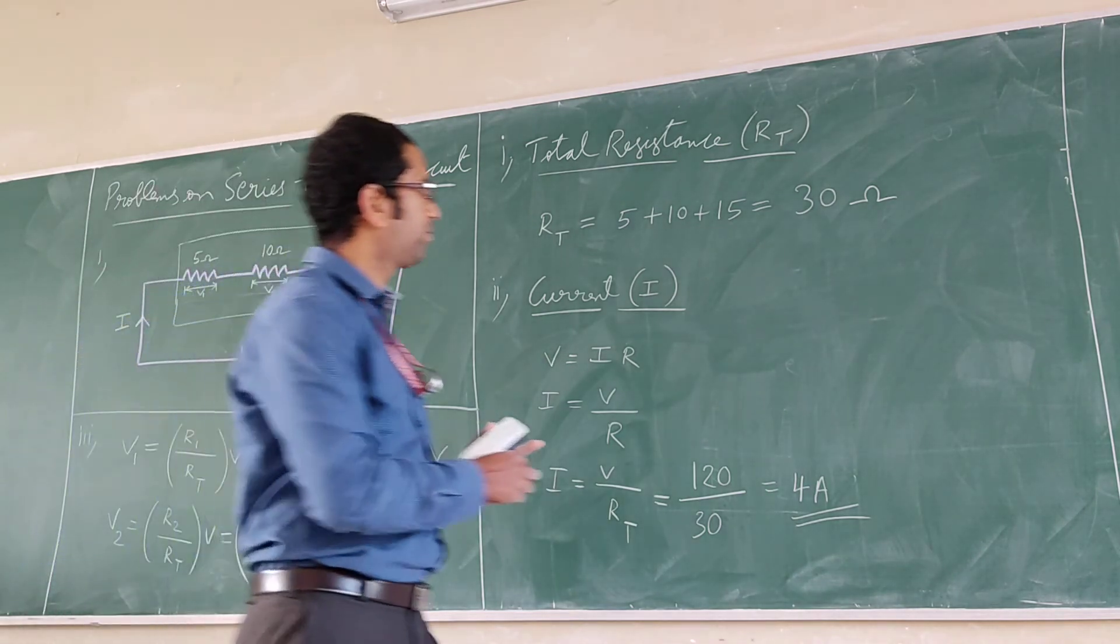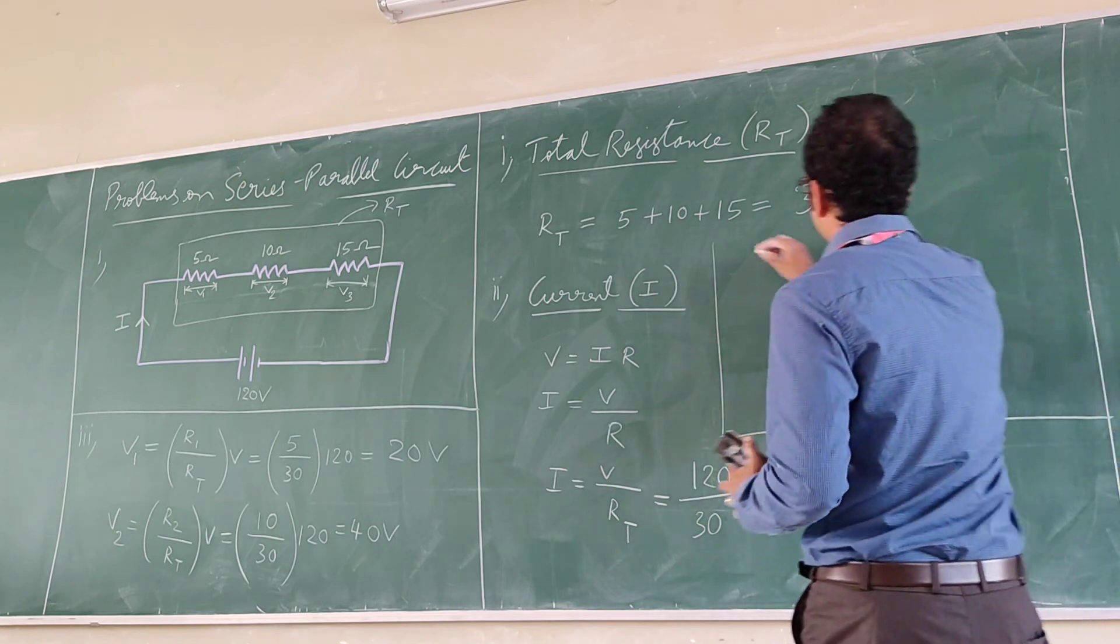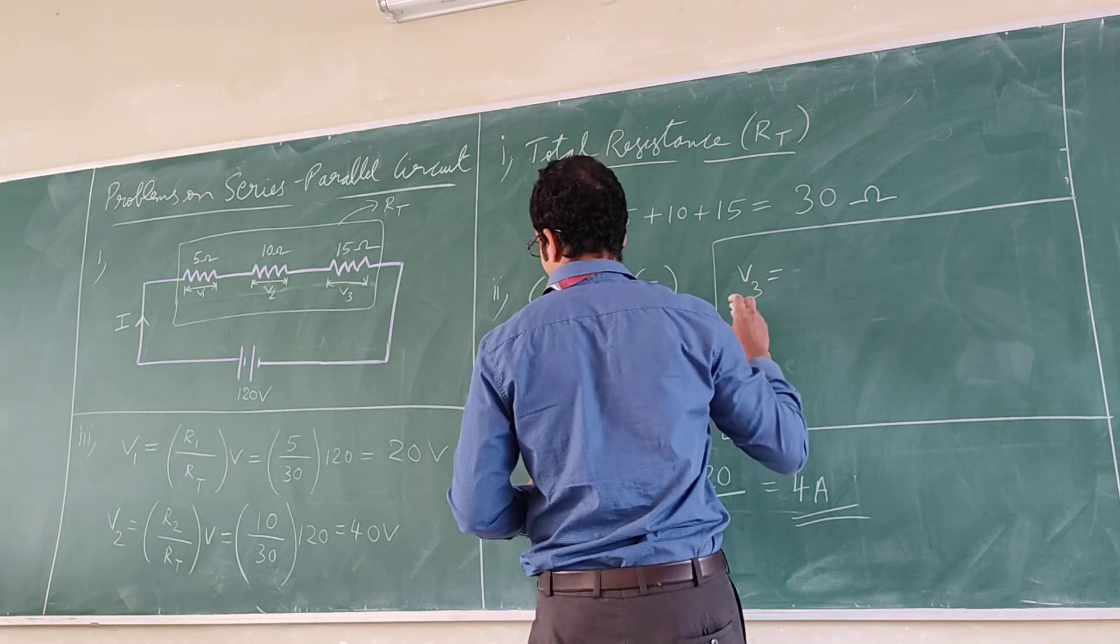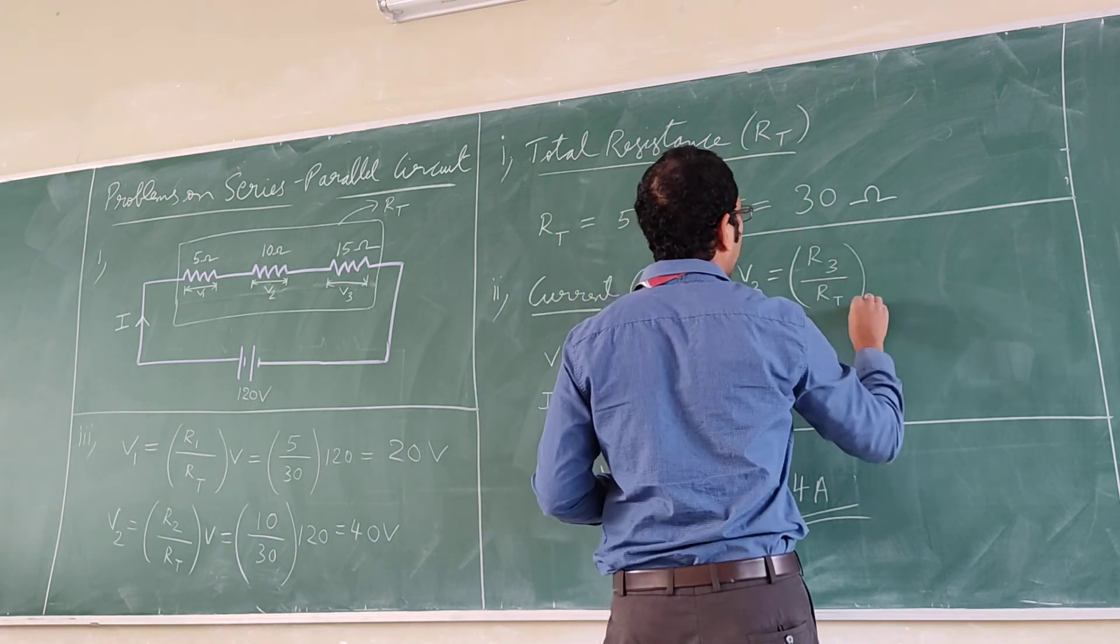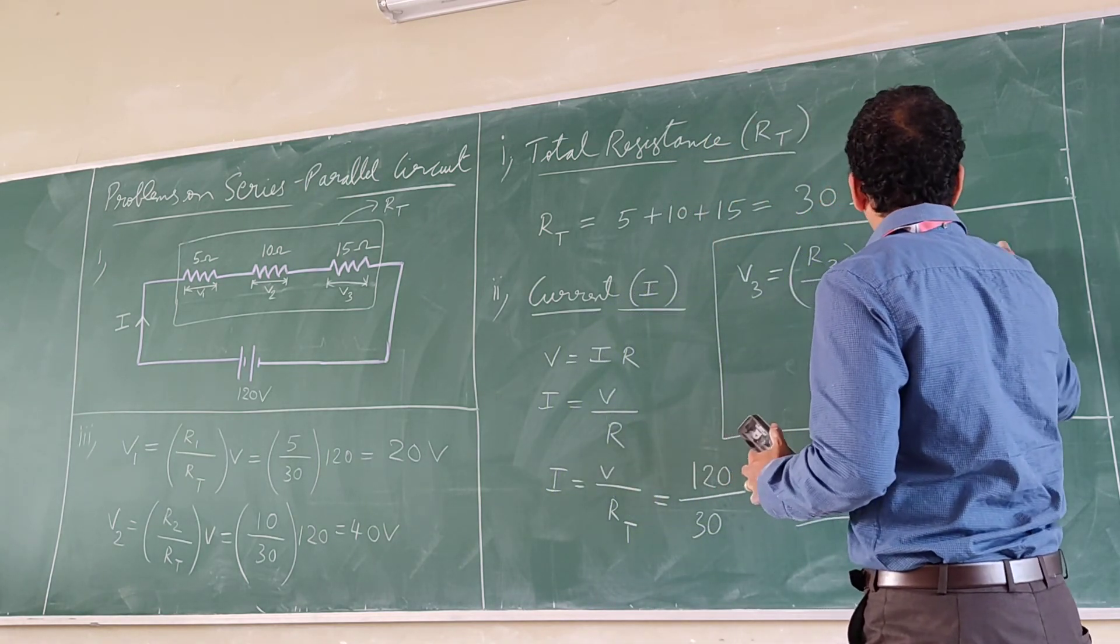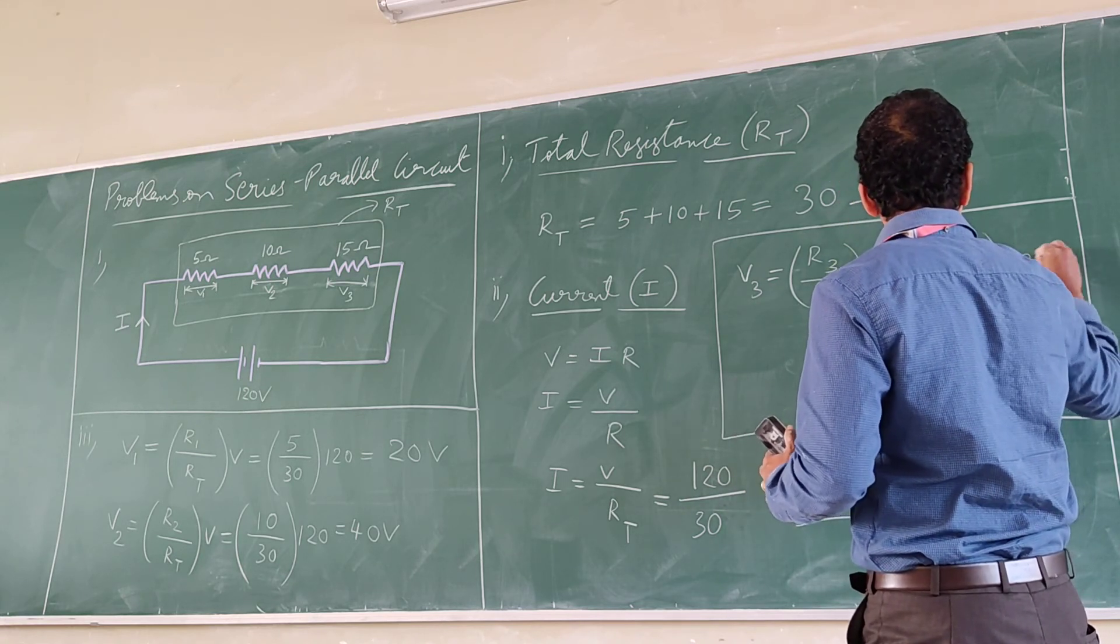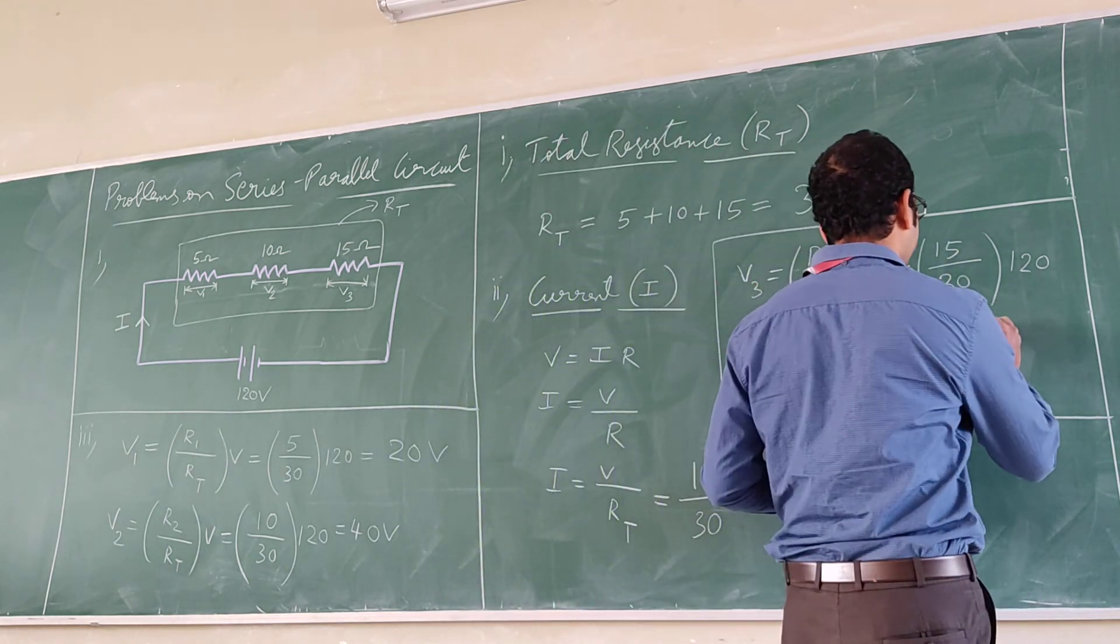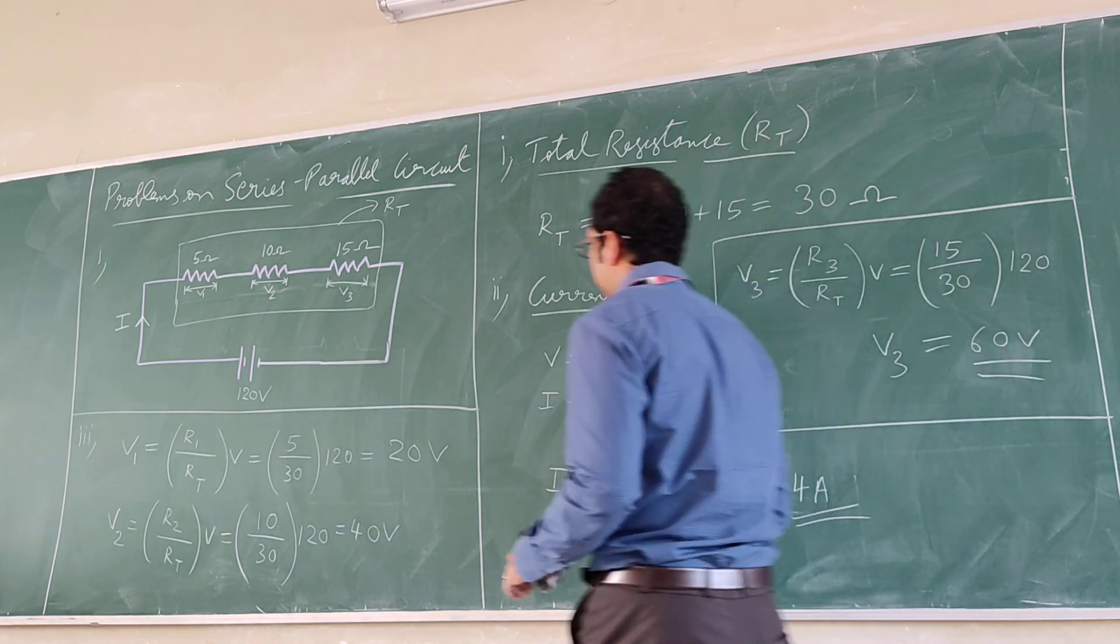Next we have V3. V3 is equal to R3 divided by Rt into V. That is 15 by 30 into 120 volts. 15 by 30 will make 1 by 2, which will make 60 volts.